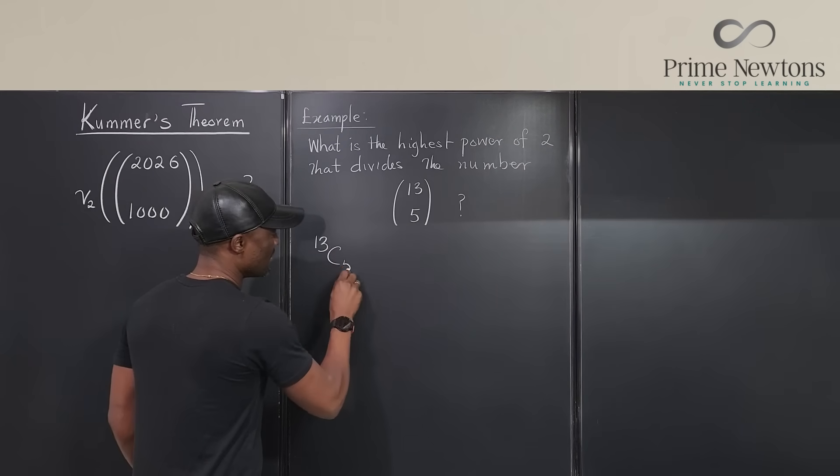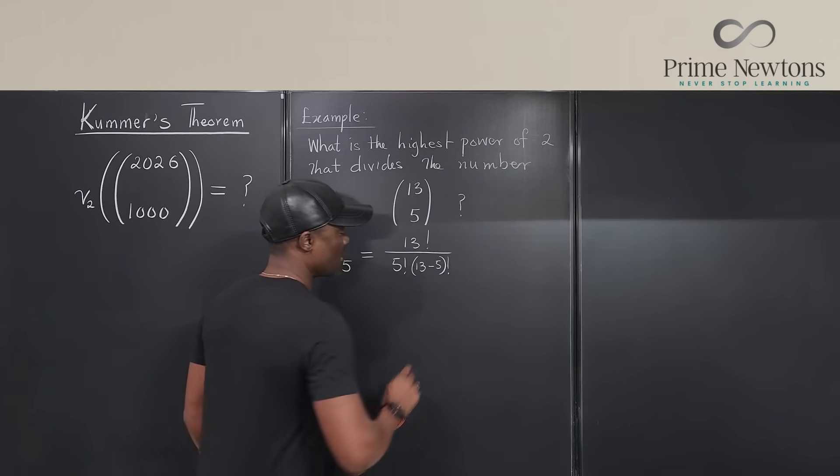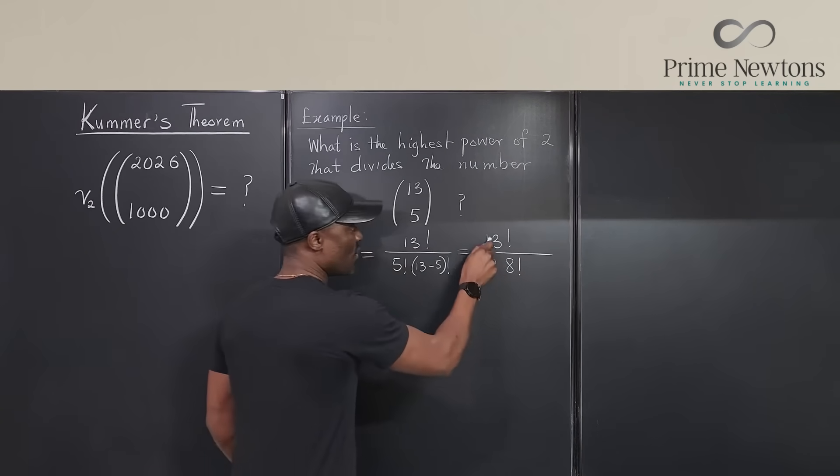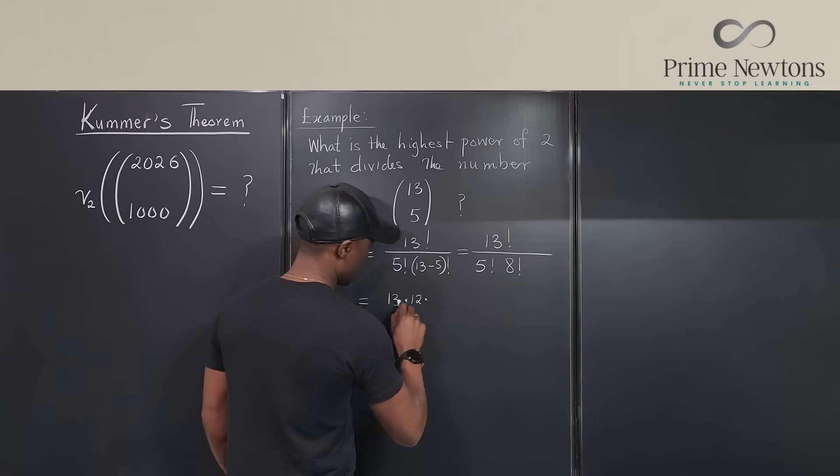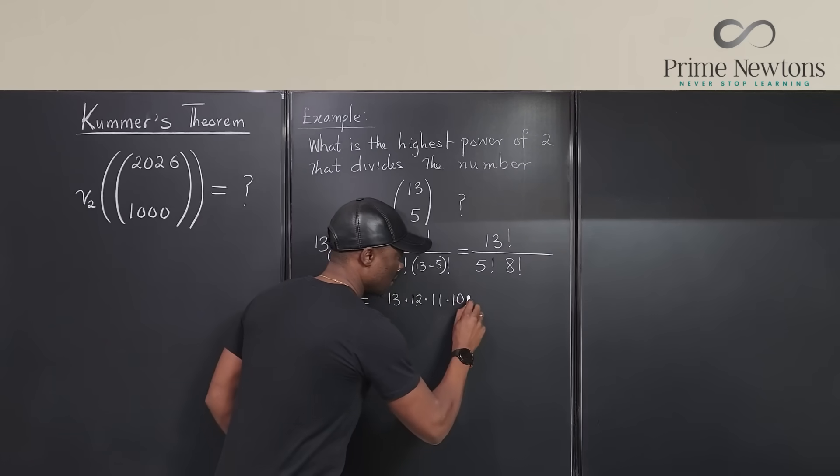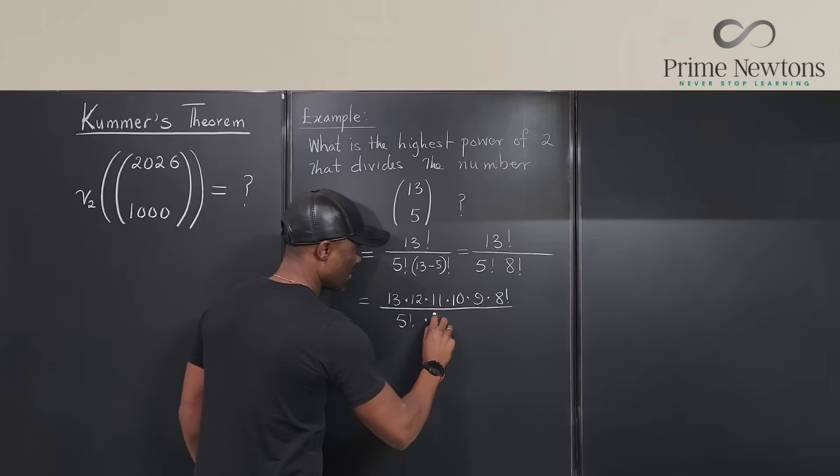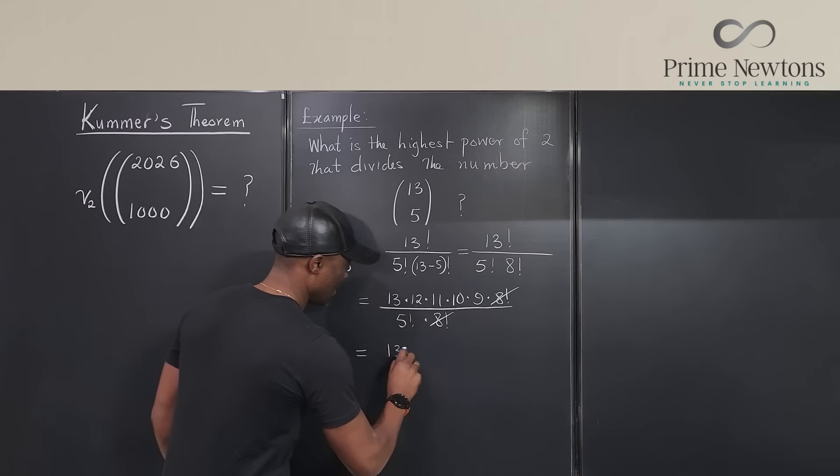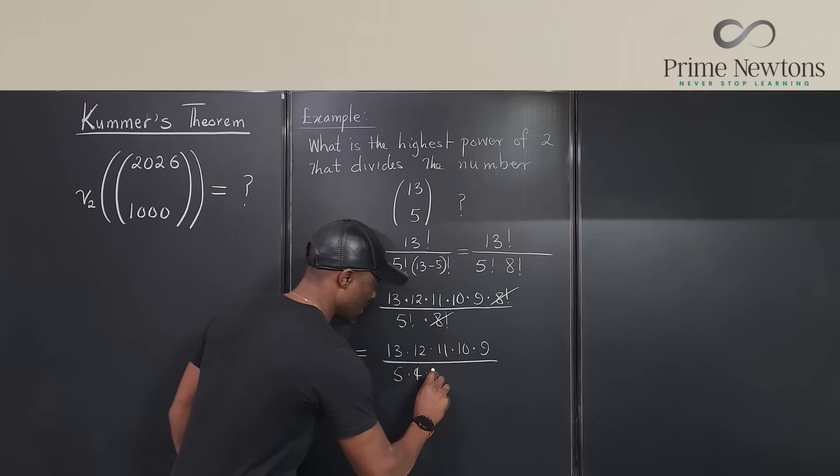So 13 combination 5 is written like this sometimes or written this way. It's going to be 13 factorial divided by 5 factorial times 13 minus 5 factorial. Let's write it again. This is 13 factorial over 5 factorial times 8 factorial. But we know that this is the same thing as 13 times 12 times 11 times 10 times 9 times 8 factorial divided by times 8 factorial. So 8 factorial cancels 8 factorial.